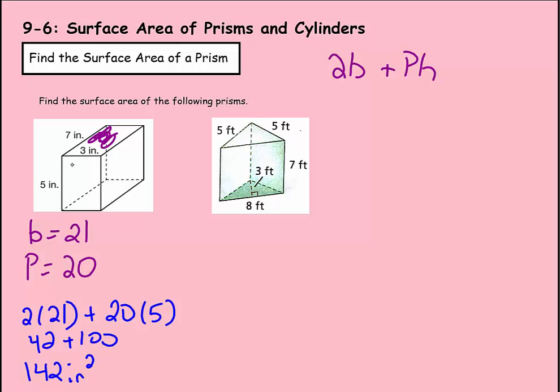It's going to be square inches because we're not finding volume anymore — we're finding how many squares can fit on the outside of the surface.